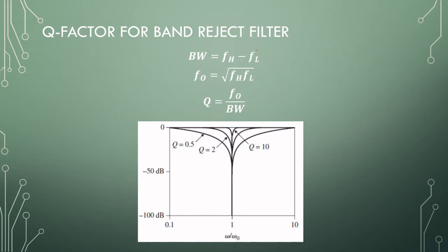But we still calculate our bandwidth the same way, minus 3 dB points, high frequency minus low frequency, and the Q-factor is the frequency that we are trying to get rid of, divided by the bandwidth that we want.